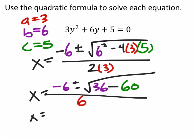So, X equals same negative 6. But now I got plus or minus the square root of negative 24, and this is all over 6.